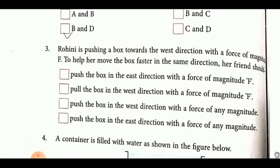Rohini is pushing the box towards the west direction with a force of magnitude F. To help her move the box faster in the same direction, her friend should - see, to move the box at higher speed, where should her friend apply force? If she pushes in east direction, think, that will be opposite, so your net force will be F1 minus F2. That means she has to push in the same direction, means west direction. Not pull also, pull will also be opposite direction. And with any magnitude. With any magnitude, her magnitude will be added, value will be added, so to any extent, she can increase even a little bit, but it will be faster.